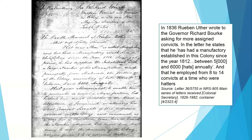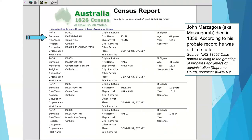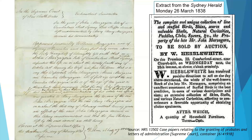These convicts were generally people who already had the hatting profession when they arrived in the colony. In the 1828 census we also have John Mazagora, whose occupation is listed as 'dealing in curiosities.' But in his probate record he's described as a bird stuffer — you can see the words 'bird stuffer' listed as his occupation in that record.